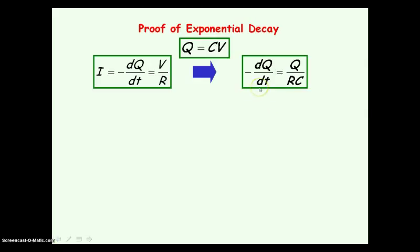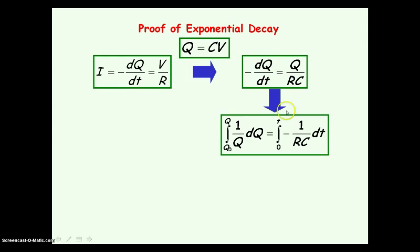We now rearrange the equation: bringing dt up to one side, bringing Q to the other side, and bringing the minus sign across. So it looks like: minus dQ divided by Q equals dt divided by RC. We've moved dt to this side, brought the minus sign over, and brought Q down so it becomes 1 over Q, with all the Q terms together.